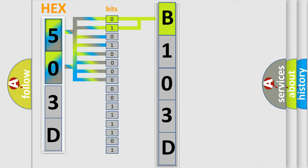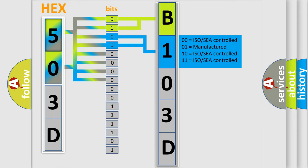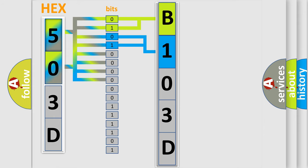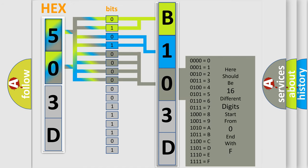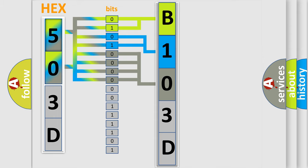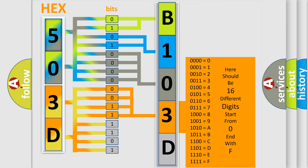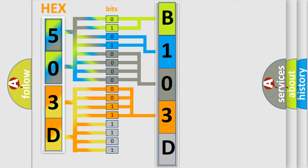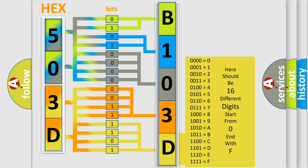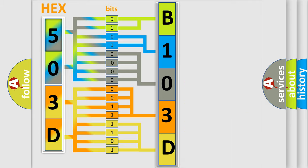The next two bits determine the second character. The last four bits of the first byte define the third character of the code. The second byte is composed of a combination of eight bits. The first four bits determine the fourth character of the code, and the combination of the last four bits defines the fifth character. A single byte conceals 256 possible combinations.